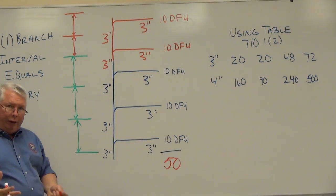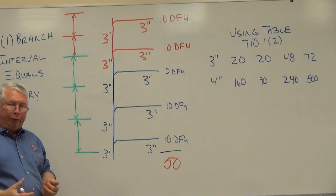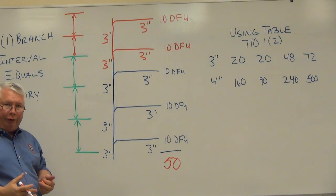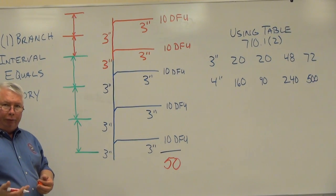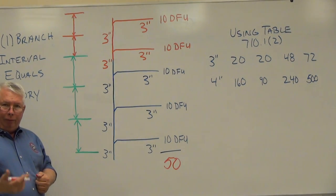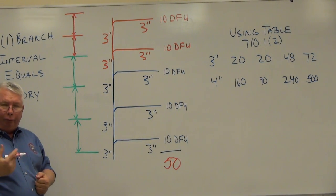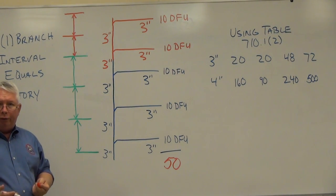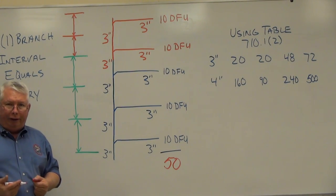The reason you can carry more drainage fixture units on a stack that's greater than three branch intervals in height is because the water's moving faster. It's been a known philosophy that water discharging into a stack greater than three branch intervals will reach terminal velocity, in other words, as fast as it's going to travel down the stack.